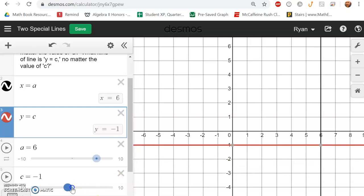I could even make c 0, and then the equation is y equals 0, and it's just a line that crosses the y-axis at 0. In fact, it's the same as the x-axis itself.